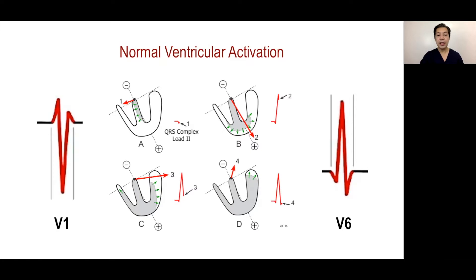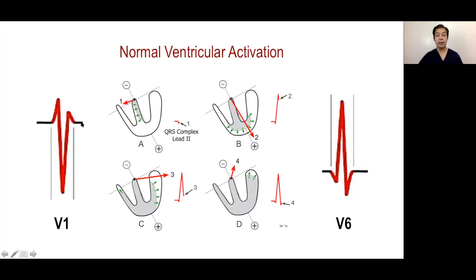The basal posterior part of the left ventricle will be the last activated, and that will be reflected by the second but shallower S-wave in V6, which corresponds to a smaller amplitude R' in V1.